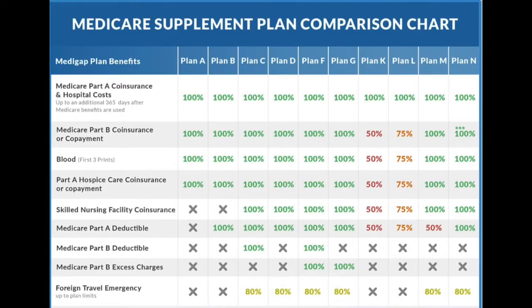Plan N is really growing in popularity in the United States and in North Carolina. It's similar to Plan G but doesn't cover some services that people use less frequently. You really need to sit down with someone and go through all 10 plans to figure out which fits your needs best — maybe you won't need a certain service and don't want to pay for that coverage.